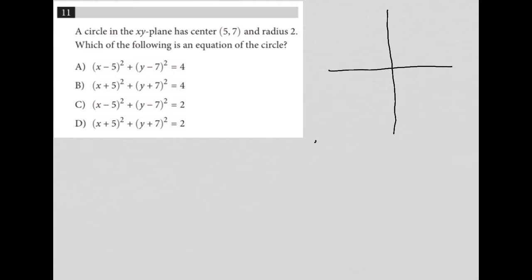But we know that the center, which is for a circle h, k, so that h, k value is 5, 7 and the radius, which is r, is equal to 2.